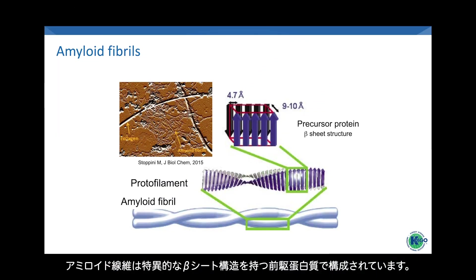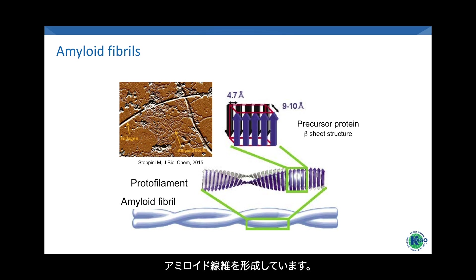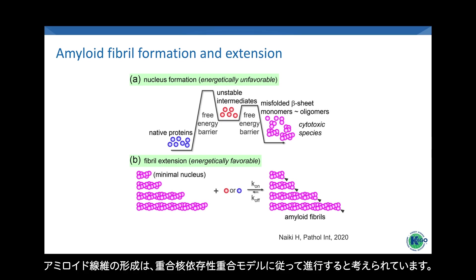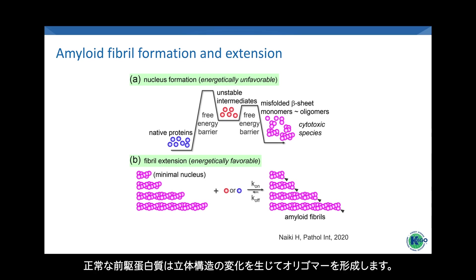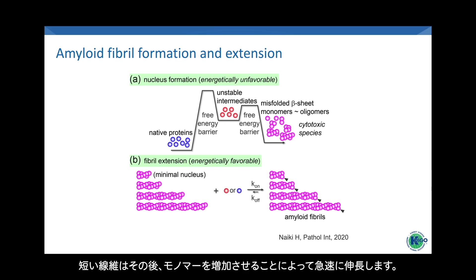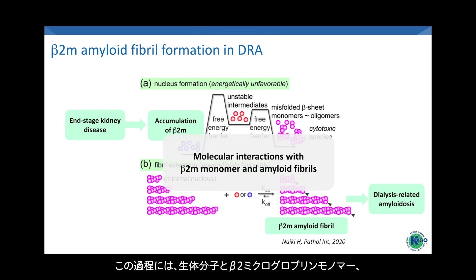Amyloid fibrils are composed of precursor proteins with specific beta-sheet structures. In DRA, beta-2-m is a precursor protein that forms protofilaments and amyloid fibrils. Amyloid fibril formation is thought to follow a nucleus-dependent polymerization model. Native precursor proteins undergo conformational changes to form oligomers, even though this is not thermodynamically favorable. Short fibers then rapidly grow by adding more monomers. End-stage kidney disease leads to the accumulation of beta-2-m monomers, resulting in the formation of amyloid fibrils in DRA. This process involves interactions between biological molecules and beta-2-m monomers and amyloid fibrils.